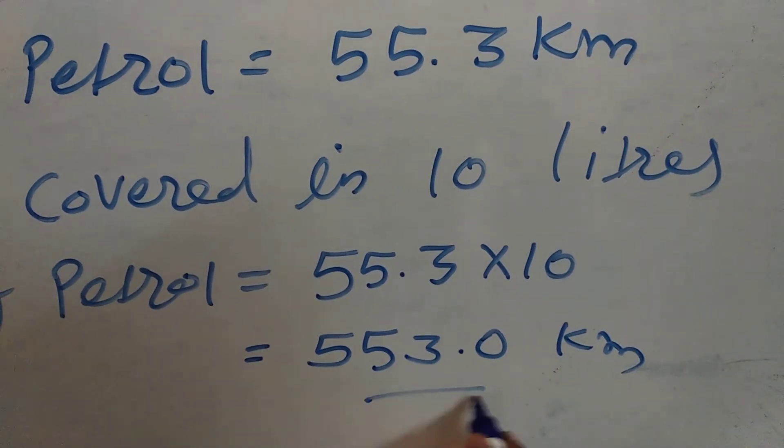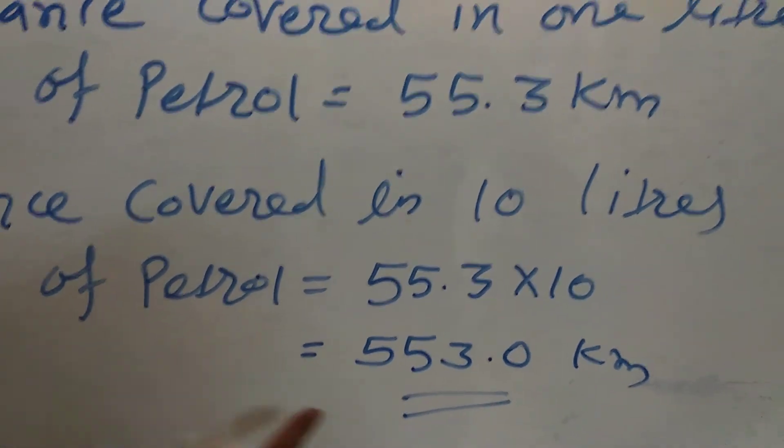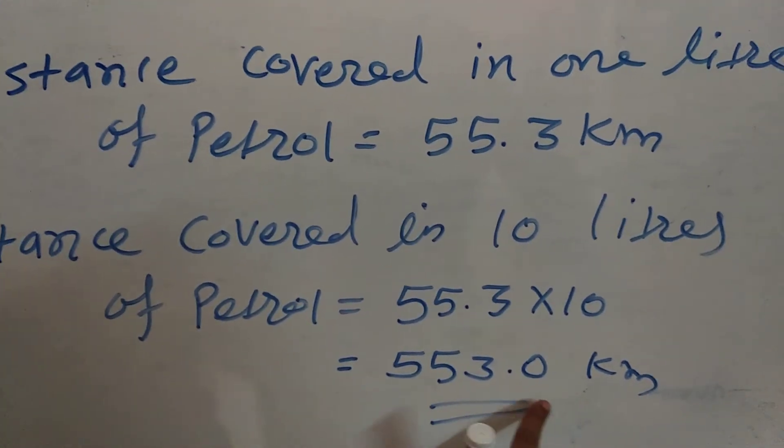So, in 10 litres of petrol, the two-wheeler will go 553 km.